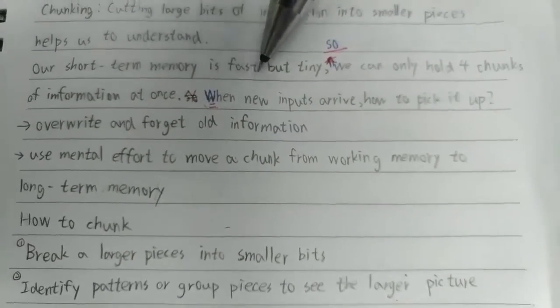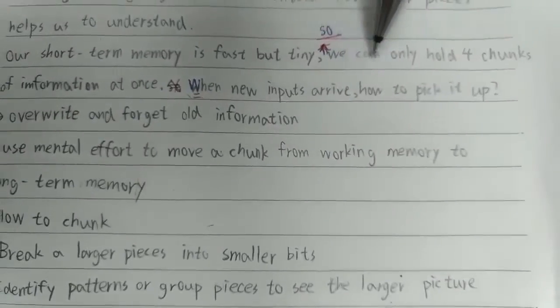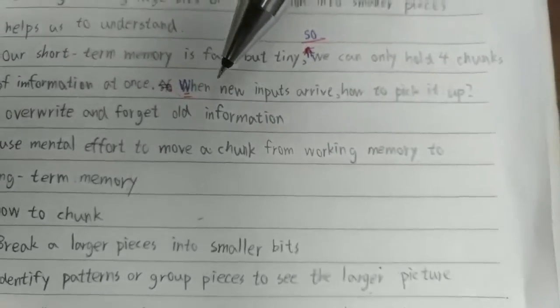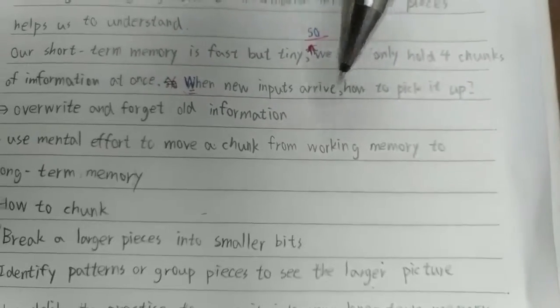Our short-term memory is fast but tiny, so we can only hold four chunks of information at once. When new inputs arrive, how to pick it up?